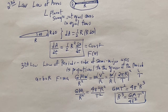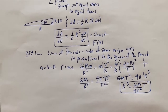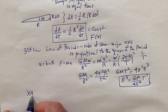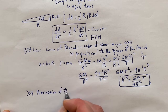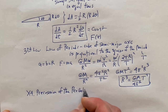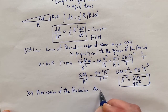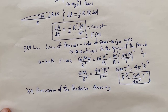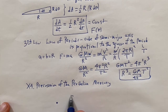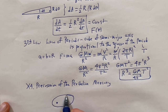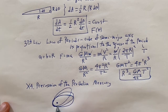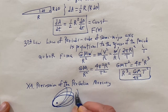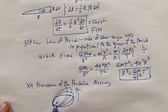Now we're ready to do the precession of the perihelion. We have all this basic stuff. Mercury is the closest planet to the sun and has the most pronounced effect. In general relativity there's precession — the orbit traces out like a poinsettia, like a flower. The closest distance to the sun is the perihelion, and the perihelion is shifting — really the whole ellipse is shifting.